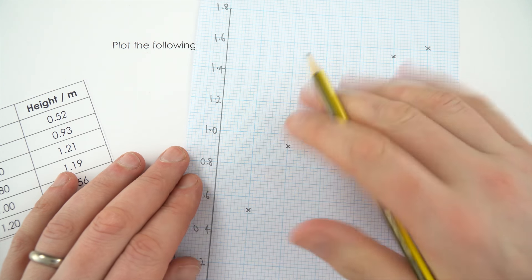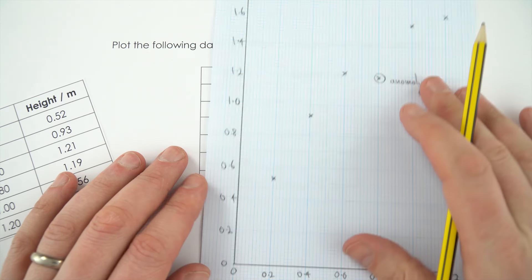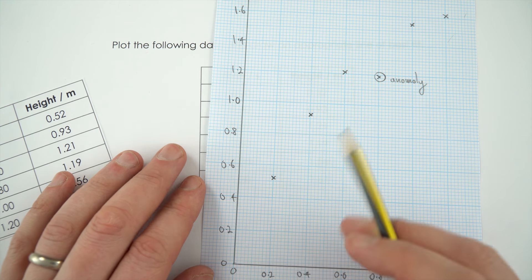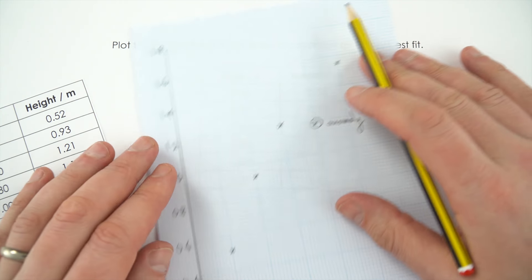So I'm going to discard that when it comes to drawing my line of best fit. And it looks as well that this line of best fit does go indeed through the origin down here. So now I'm just going to very carefully draw my line in.